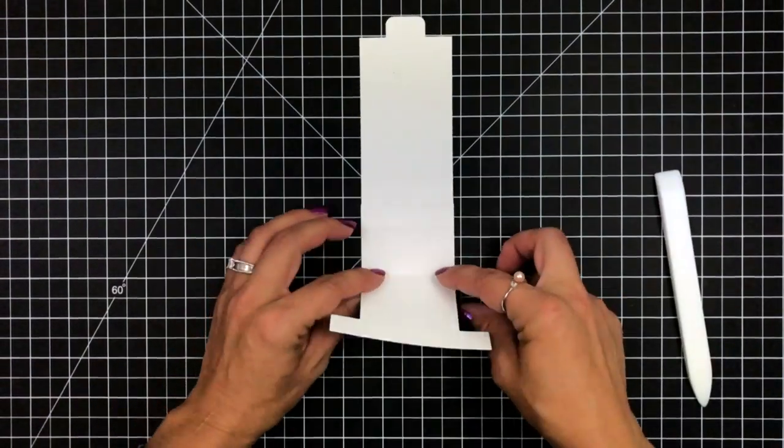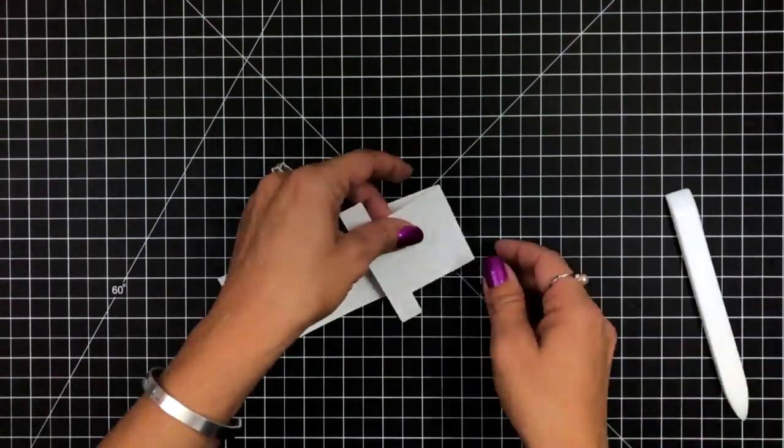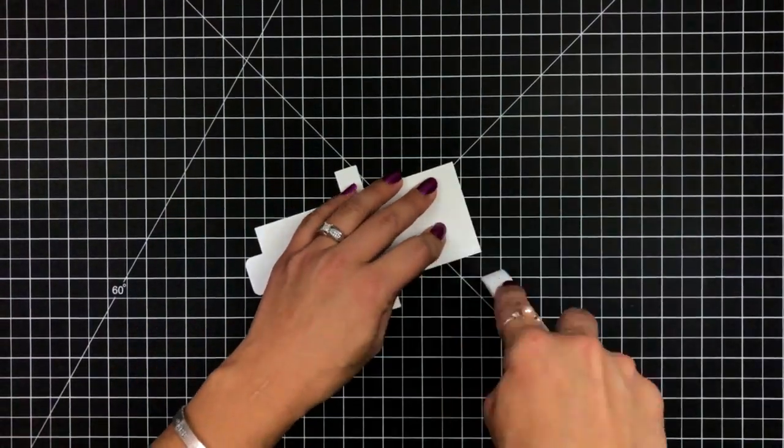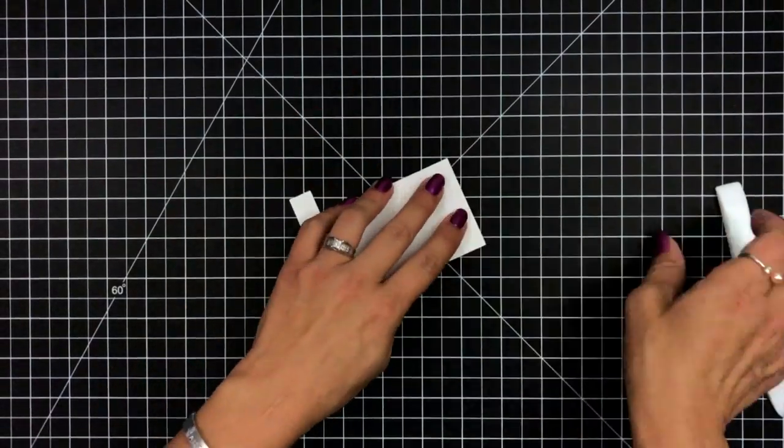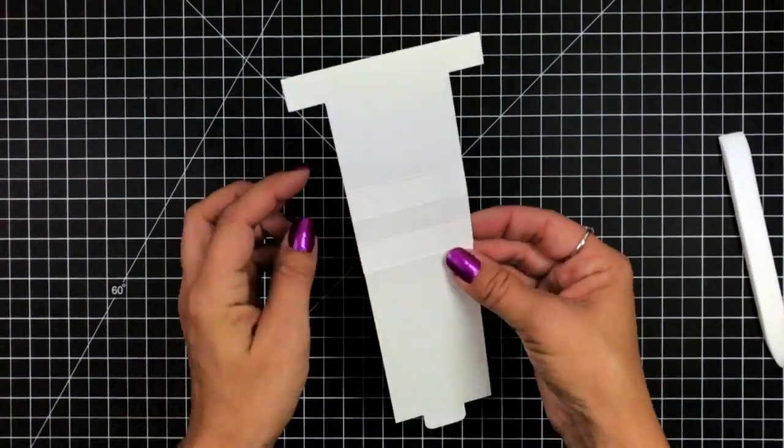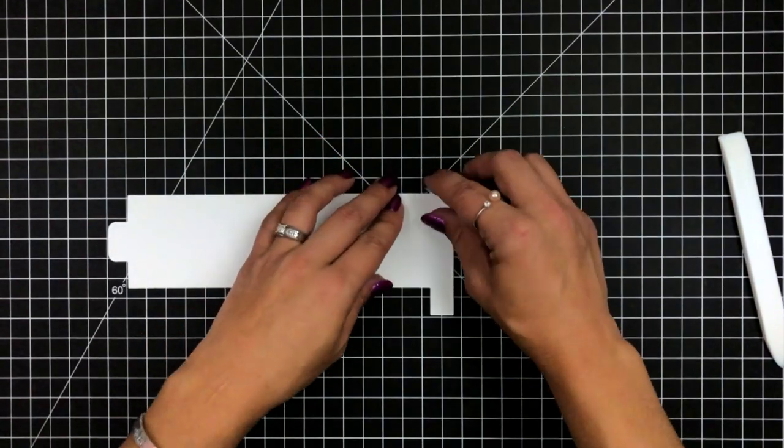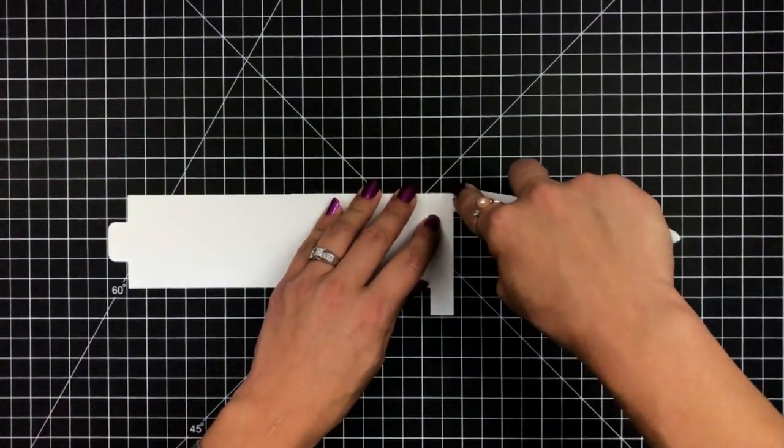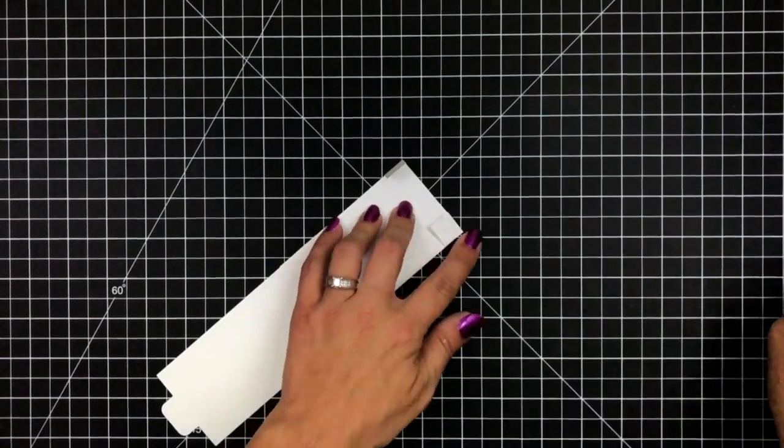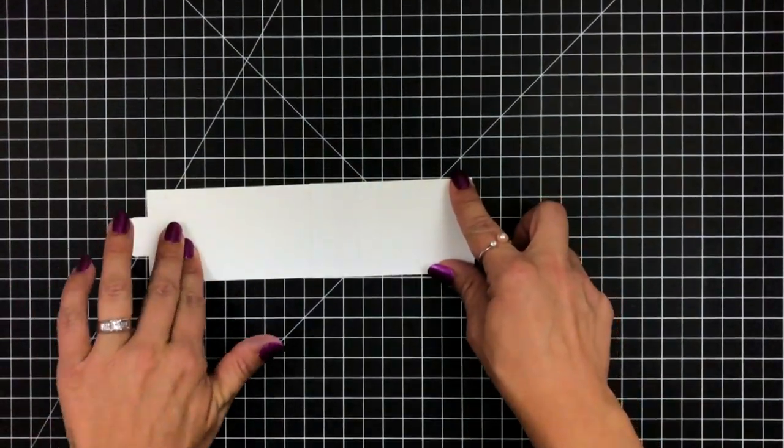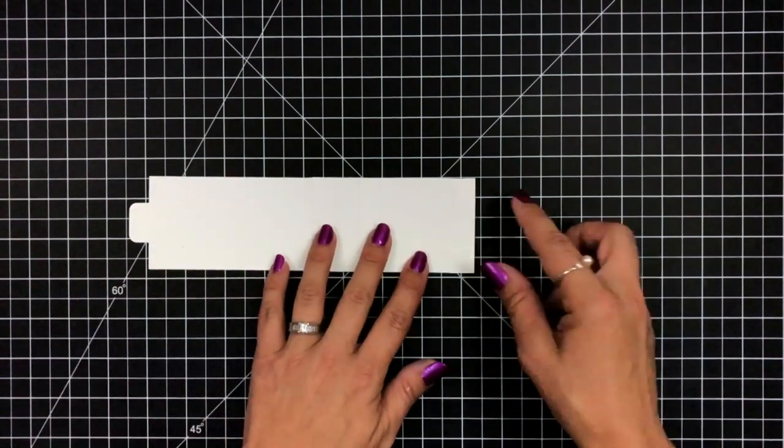This is just going to help make it easier when you're pulling your interactive piece. Then going back through, folding those the other direction and creasing those as well. You also want to make sure you crease those two tabs that are off on the side. This is what's going to attach our Flippin' Awesome element to our card front.